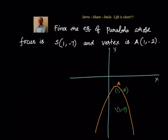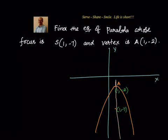Based on this, we know that the distance between the vertex and the focus is the value of a. The axis of the parabola passes through (1, -2) and (1, -7). From that we know that a = 5, because the distance from -2 to -7 is 5.